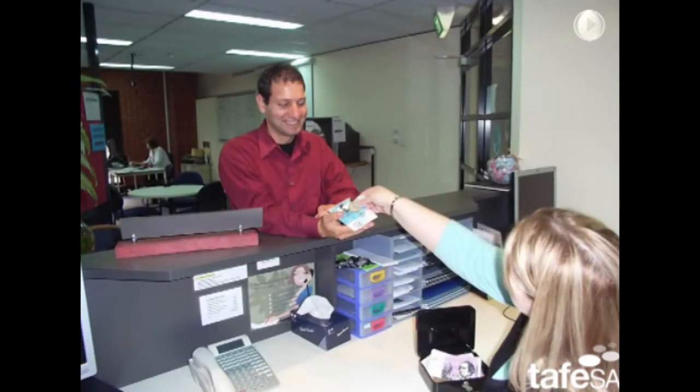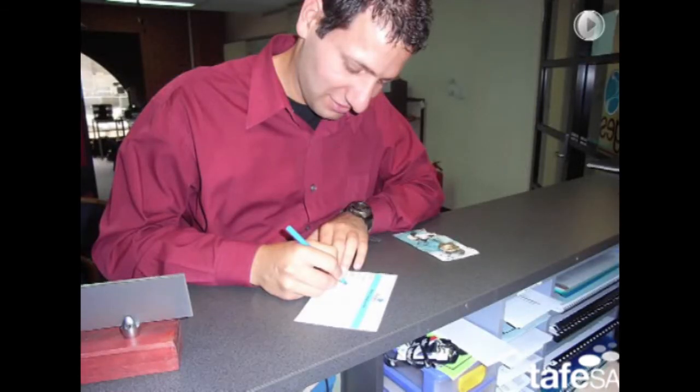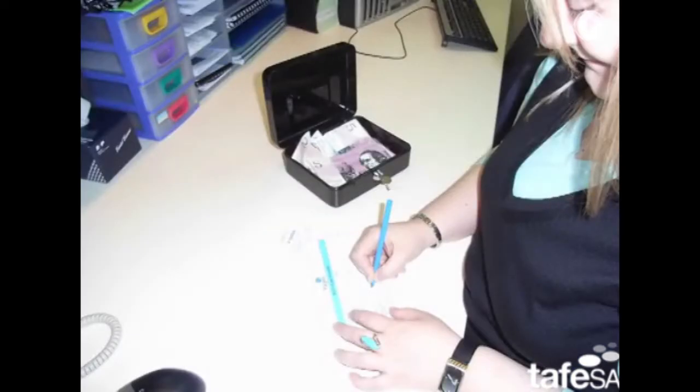After filling in the voucher, Kathleen pays Akram the money. Akram signs to say he has received the money. Kathleen also signs to show that she has paid the money.